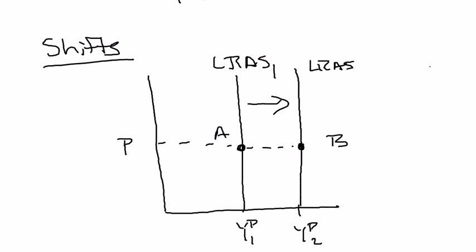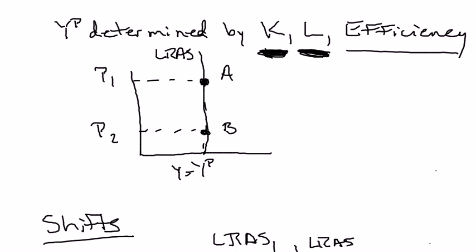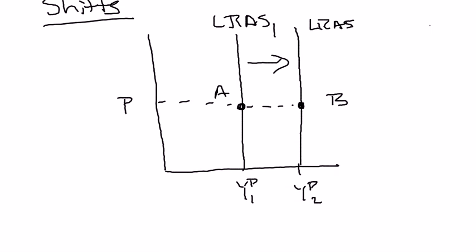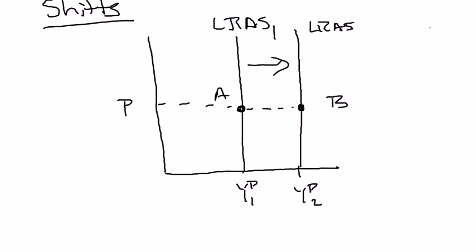That was the effect of an overall increase in the level of efficiency. I would have gotten exactly the same result if instead the labor force had expanded — say people decided to work until they were 75, so you had more workers — or the capital stock increased for whatever reason. So anything that increases capital, labor, or the overall level of efficiency shifts the long-run aggregate supply curve to the right.